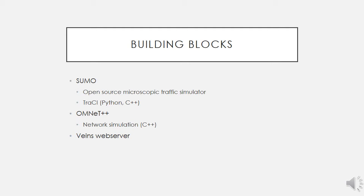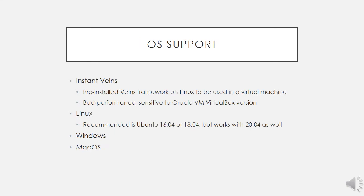The base framework can be used on all major operating systems — Linux, Windows, and macOS are all supported. We don't even have to install WANES on our system; we can download a pre-installed WANES framework on a Linux system which can be used in a virtual machine. This is good if you just want to try WANES out, but I wouldn't recommend it for development purposes because I had performance issues and the virtual machine was sensitive to which Oracle VirtualBox version I imported it in.